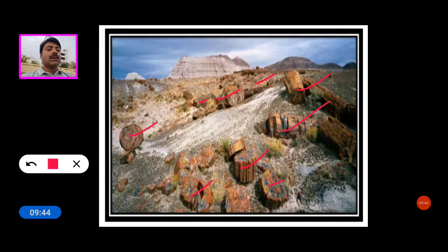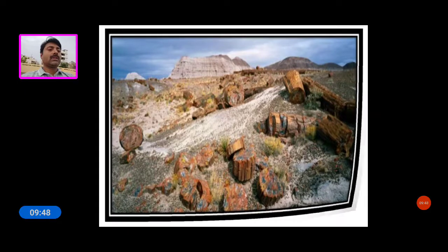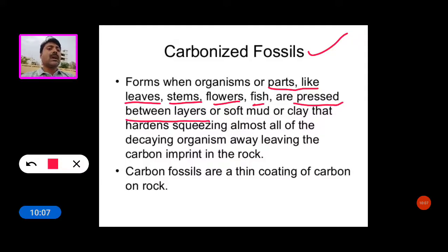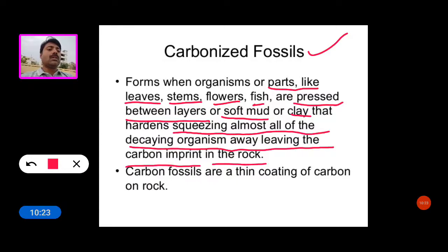Now see the carbonized fossils. They form when organisms or parts like leaves, stems, flowers, and fish are pressed between layers of soft mud or clay that hardens, squeezing almost all of the decaying organism away, leaving a carbon imprint in the rock. Carbon fossils are a thin coating of carbon on rock, and this process is called carbonization.